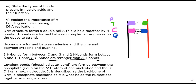When we refer to base pairing in DNA, this is what we are referring to: one base on one strand of DNA pairs with its complementary base on the other strand. If adenine is here, across from it must be thymine; if cytosine is here, it must have guanine.